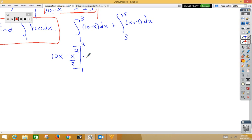When we plug in the 3, we get 30. When we plug in the 3 on the second term, we get negative 9 halves, minus the bottom bound, so that would be 10 minus 1 half.